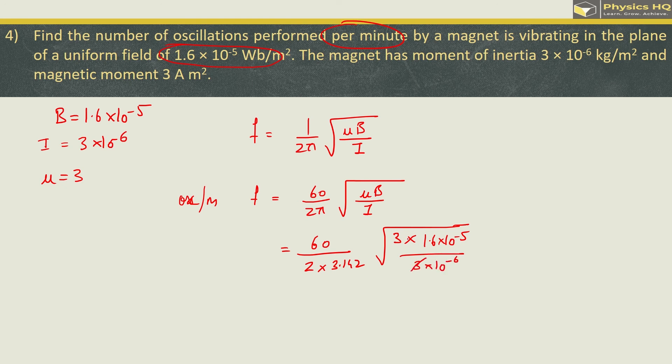So this 3 and 3 will cancel out and 10 raise to minus 6 plus 6 so in the numerator we will be left with 1.6 into 10 which is 16. Here we got 30 upon 3.142 into root of 16 which is 4. After multiplying this we will have 123.142, this will give us the answer as 38.19.